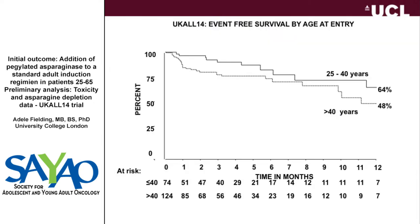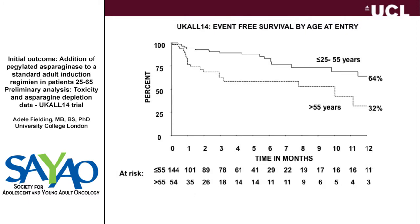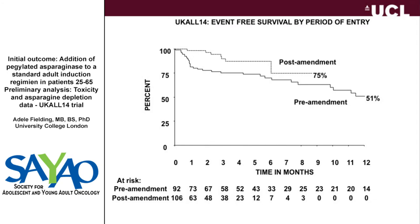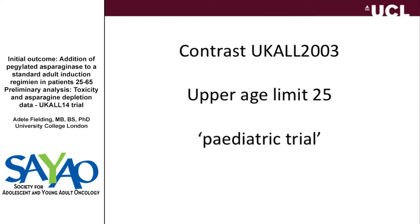Looking at survival curves, for the 25 to 40-year-olds — which is a population that's the major focus of this meeting — they're not doing too badly. But patients over the age of 40 were doing less well due to this very high early mortality. Cutting by age 55 makes it even worse. Having carried out the amendment, we significantly impacted that — pre- and post-amendment, we've really got rid of those early deaths.